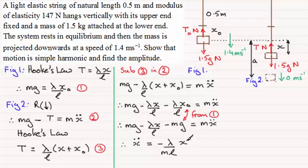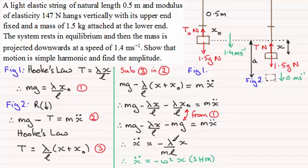This particular form is exactly the same as ẍ = −ω²x, which is the standard form for simple harmonic motion. We have the constant ω² = λ/(ML), so ω = √(λ/ML). This justifies that the motion follows simple harmonic motion.